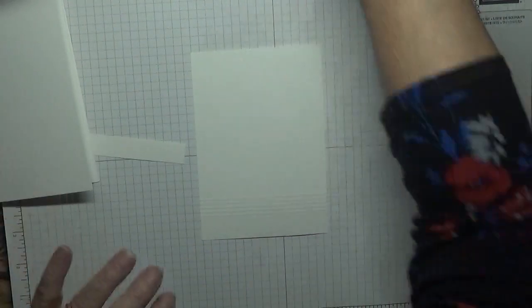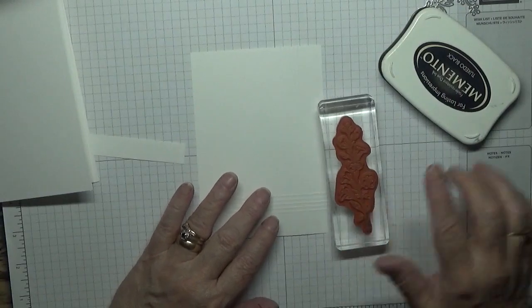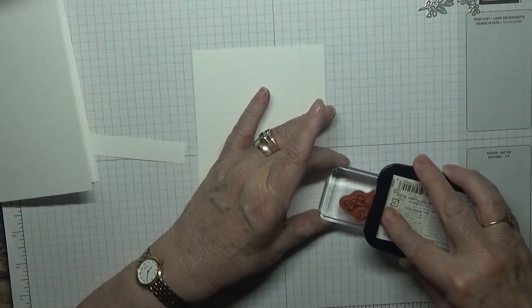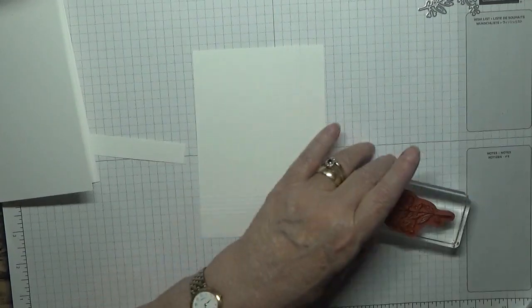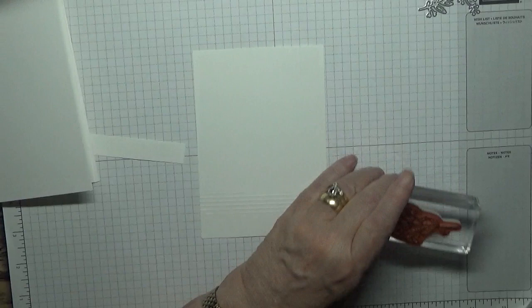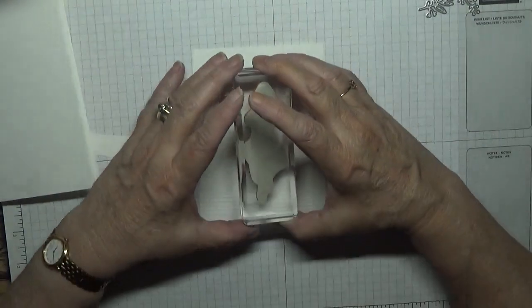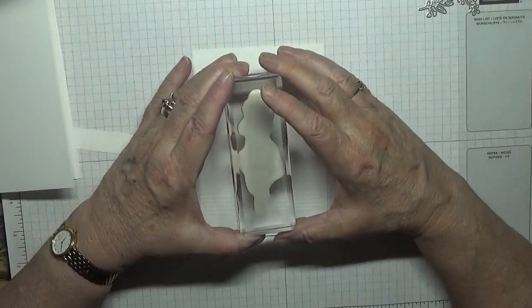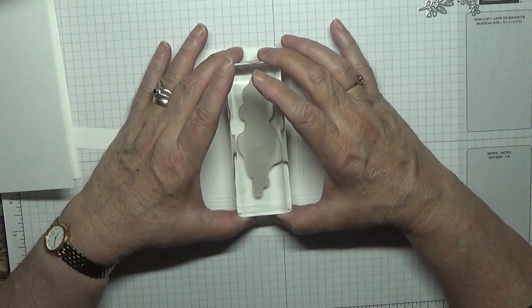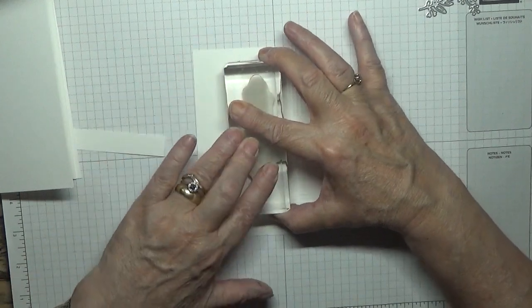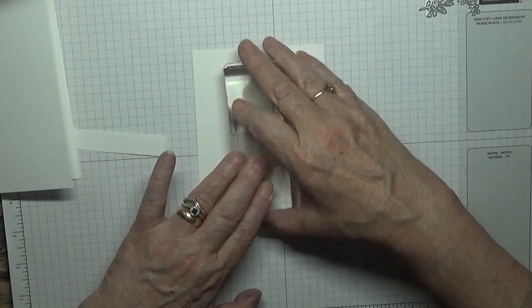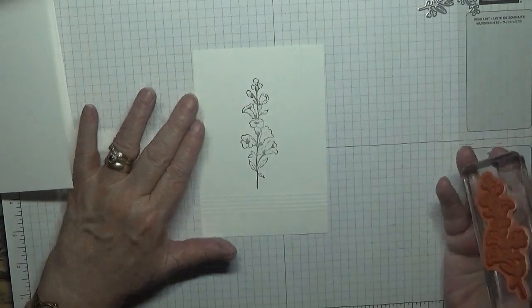What we need to do now is our stamping. We'll bring our flower in, ink it up, and we're going to stamp that round about there, just so the flowers don't go on the crease. It should work out about in the middle of your card. Lift up. Nice.